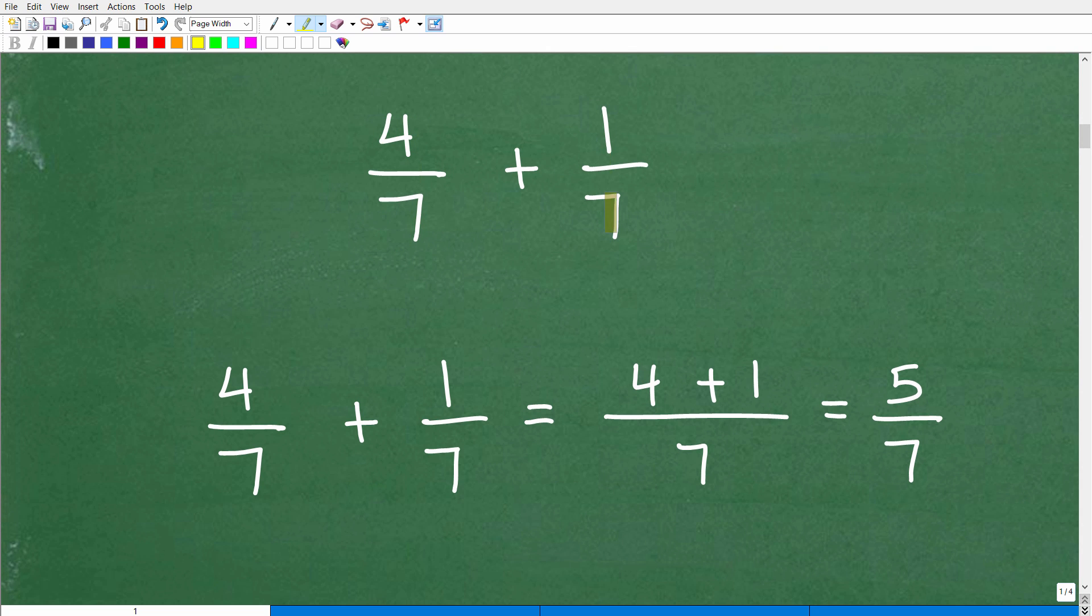Let's take a look at a more basic problem to drive that point home. Here's 4 sevenths plus 1 seventh. Here, the denominators are precisely in common. We don't have to find the lowest common denominator. How do we add fractions when we already have the same denominator? Pretty simple. You just write one of those denominators, in this case 7, and then add or subtract the respective numerators. So this is 4 plus 1, that will be 5 over 7.